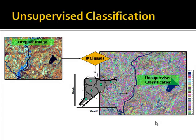Pixel-based classifiers, such as unsupervised classification, only make use of spectral information — that is, they only apply the color and tone element of image interpretation, so they have limited accuracy. In unsupervised classification, the classifier takes a user-defined number of classes and applies a statistical algorithm to group pixels that are similar into similar classes.